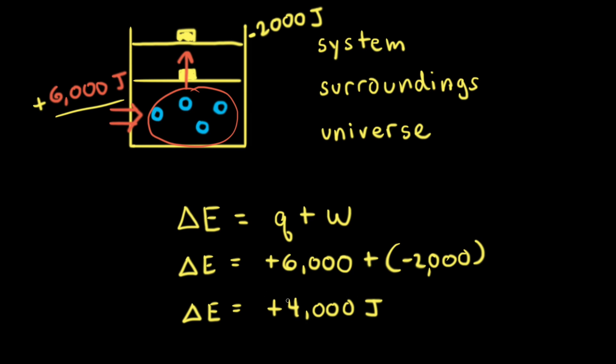Thinking about internal energy like our bank account, we've gained 4,000 joules — like gaining $4,000. Since the system has gained 4,000 joules, the surroundings must have lost 4,000 joules. But since energy is conserved, the total energy of the universe remains constant.